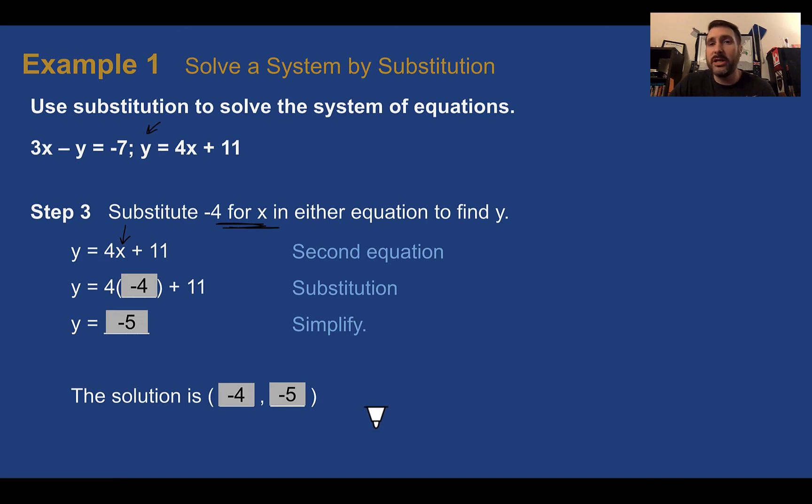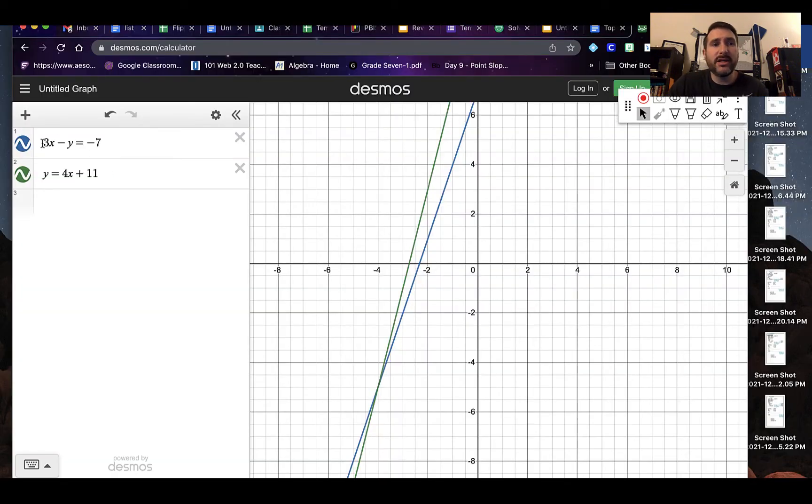To check our answer, we have a couple ways we can do it. We can plug in negative 4 for x and negative 5 for y and see if we get a true statement. Or, since we already know how to solve by graphing, we could double check to see if we get the correct intersection point if we type in both of these into Desmos. Do we get a point where they intersect at negative 4, negative 5? In Desmos, if I'm checking my answer, I have my two equations typed in. My solution is where they intersect, they intersected at negative 4, negative 5. That's what I got by substitution, so I must have done the process correctly.